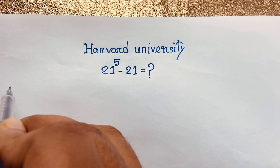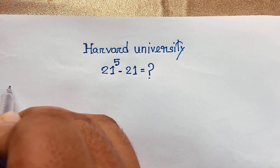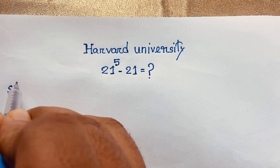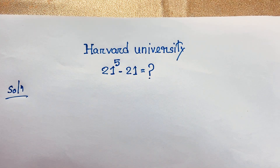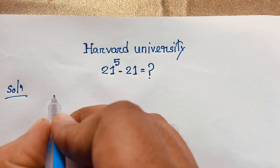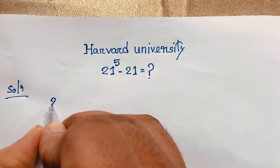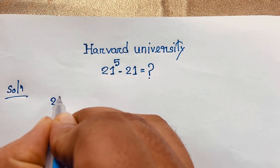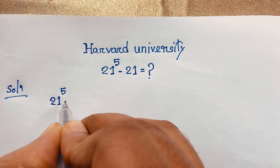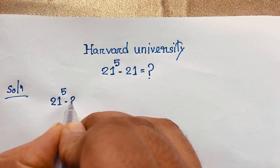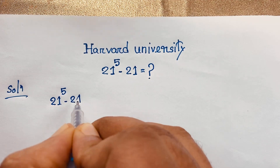I solved this question step by step as a math solution. Our question is 21 to the power 5 minus 21.